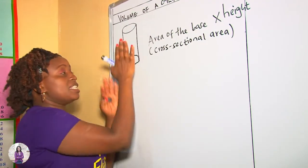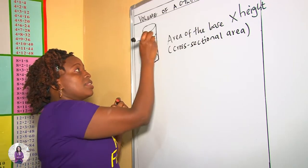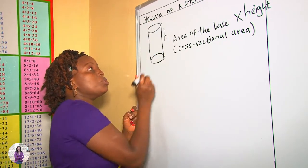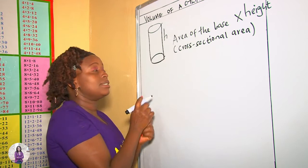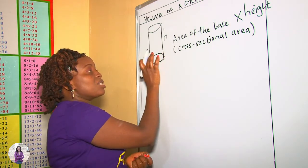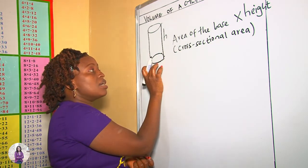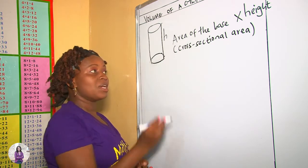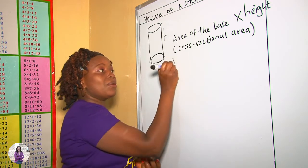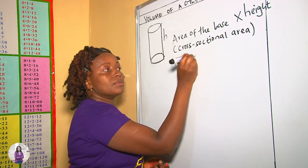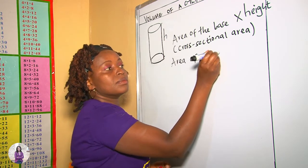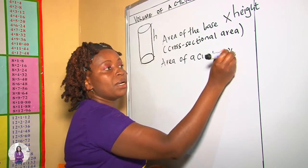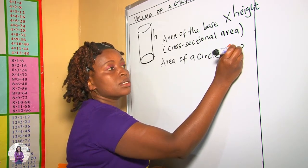In this cylinder, the height is here — that is the distance from here to here is what we call the height. The area of the base, as you can see, the base of this cylinder is the circle. And how do we get area of a circle? Area of a circle is equal to pi r squared.